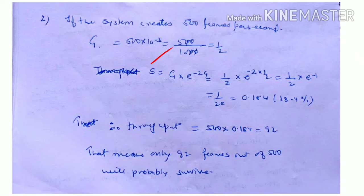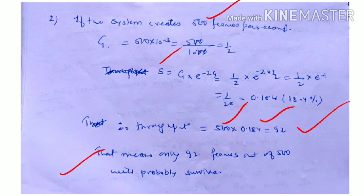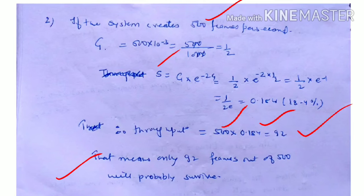So 92 frames per second survive successfully. Out of 500 frames per second transmitted, only 92 frames per second are successfully transmitted without collision. The remaining 500 minus 92 equals 408 frames per second will collide with frames from other stations.